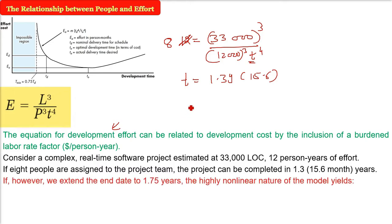Now, if we extend the end date to 1.75 years, that is t from 1.3, if I'm changing it to 1.75 years, what will happen? This is the highly nonlinear nature of the model, what it will give. Now I'm stretching, I have to use P as 10,000. I'm just writing the equation now.